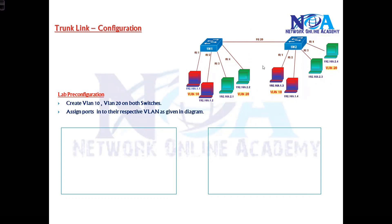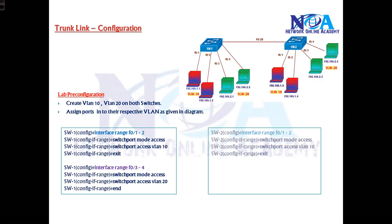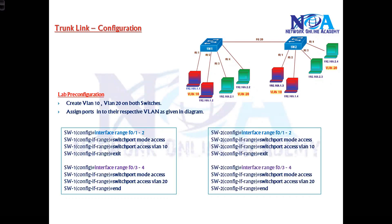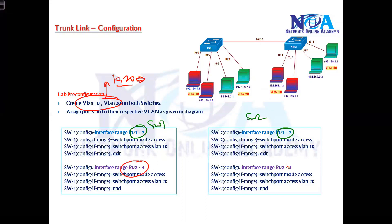We will verify communication before and after the trunk configuration. The prerequisites involve creating VLANs and assigning ports, which we covered in previous classes. We will create VLANs 10 and 20, then assign ports 1 and 2 on both switches to VLAN 10, and ports 3 and 4 to VLAN 20.